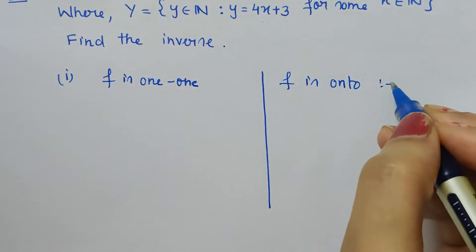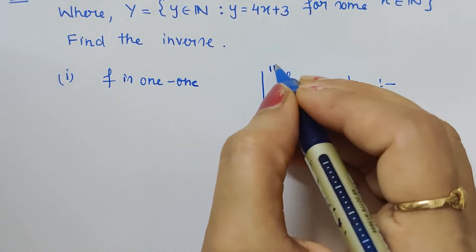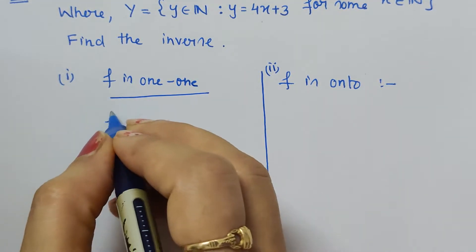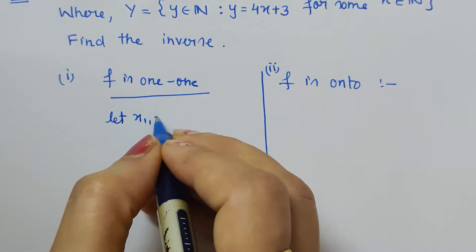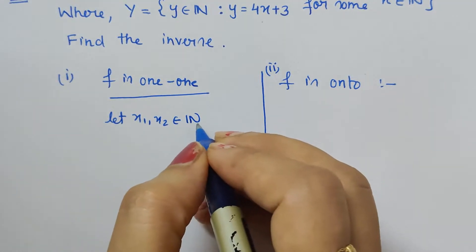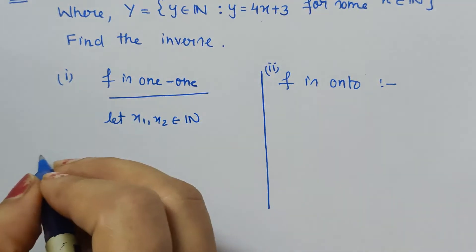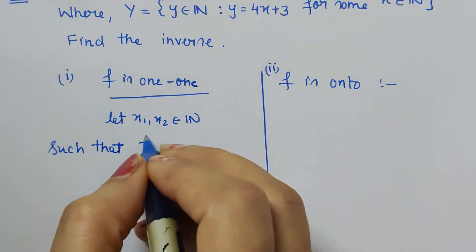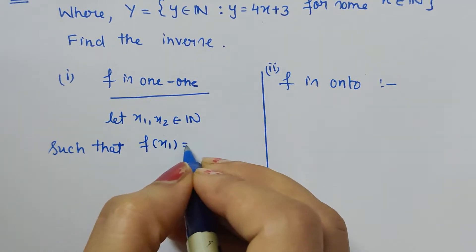So for one-one, what we have to do is assume any two elements of the domain. So let x₁, x₂ belong to the set of all natural numbers, and it is the domain given to us, such that f(x₁) is equal to f(x₂). Now in the question, f(x) is 4x plus 3.